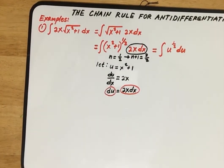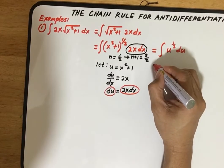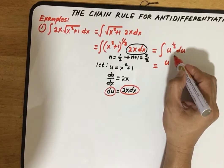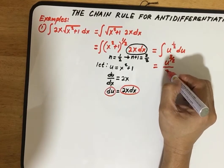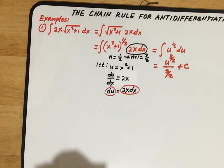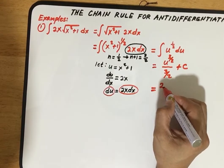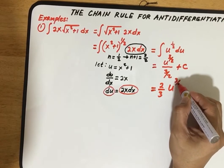The result is now in power form, so we can use the power formula. This gives us u to the n plus 1, where n plus 1 equals 3/2, divided by n plus 1 which is 3/2, then plus C. Using the rules of division of fractions, we can rewrite this as 2/3 times u to the power 3/2, plus C.